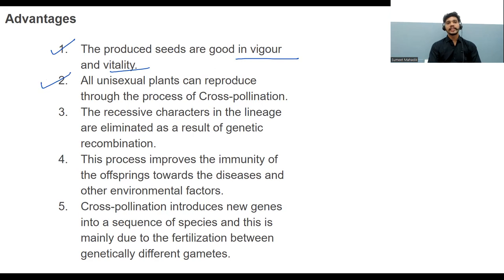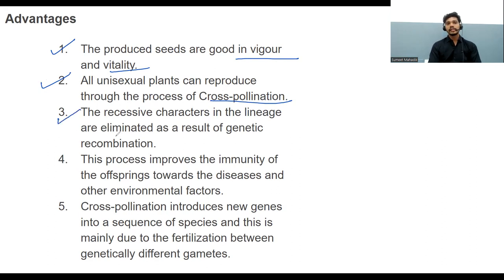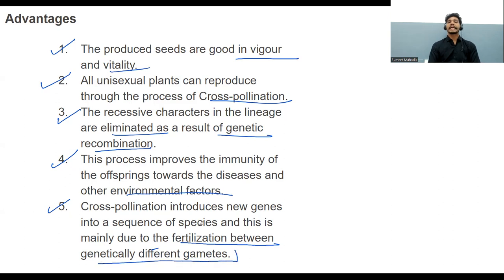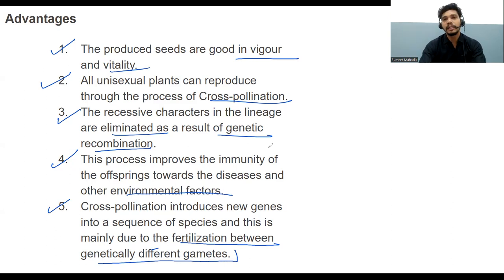All unisexual plants can reproduce through cross-pollination. Recessive characters and linkages are eliminated as a result of genetic recombination. This process improves the immunity of offspring toward disease and other environmental factors, because different genetic information is transferred, increasing resistance. Cross-pollination introduces new genes into the species, mainly due to fertilization between genetically different gametes, bringing variation.